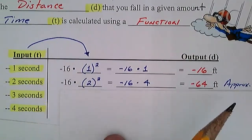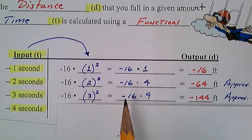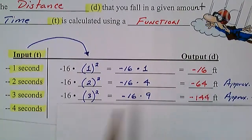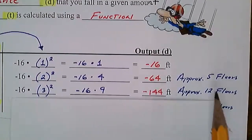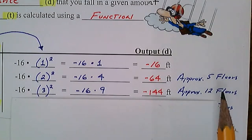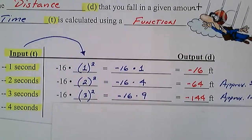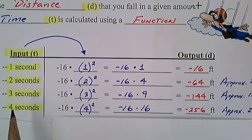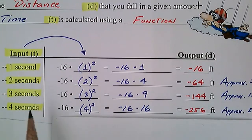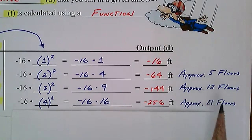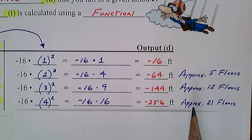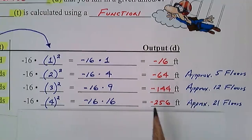In three seconds — one-one-thousand, two-one-thousand, three-one-thousand — you would fall approximately twelve floors. In four seconds: four squared is sixteen, times sixteen is two hundred fifty-six feet, which is approximately twenty-one floors — like one of those tall casino hotel towers in Las Vegas. So the function D = -16t² tells BASE jumpers how far they'll fall and when they need to pull their parachute.